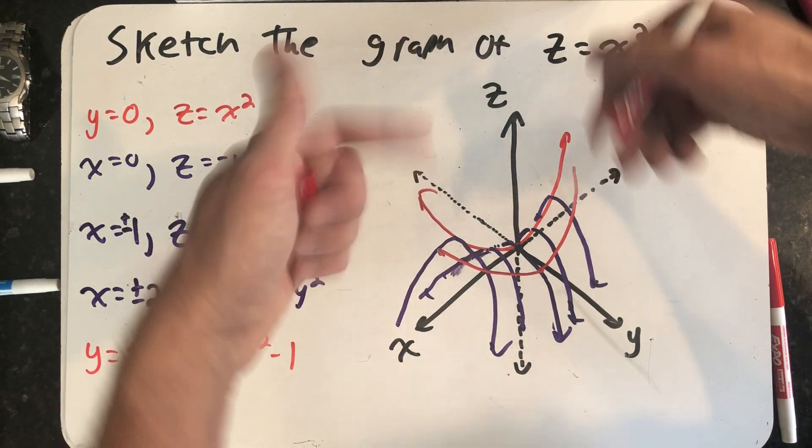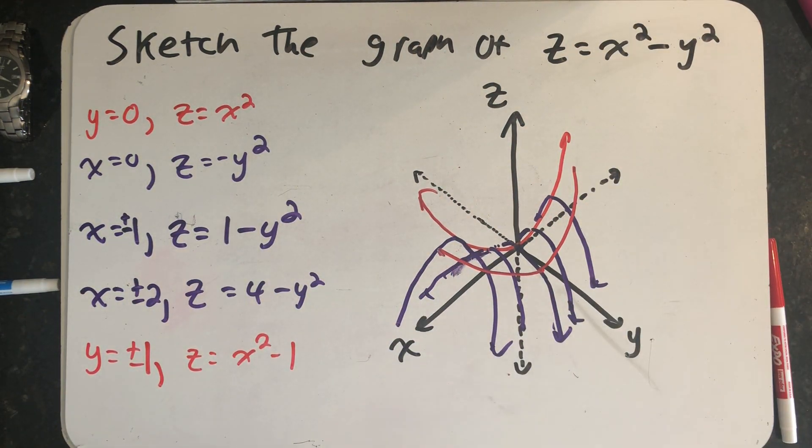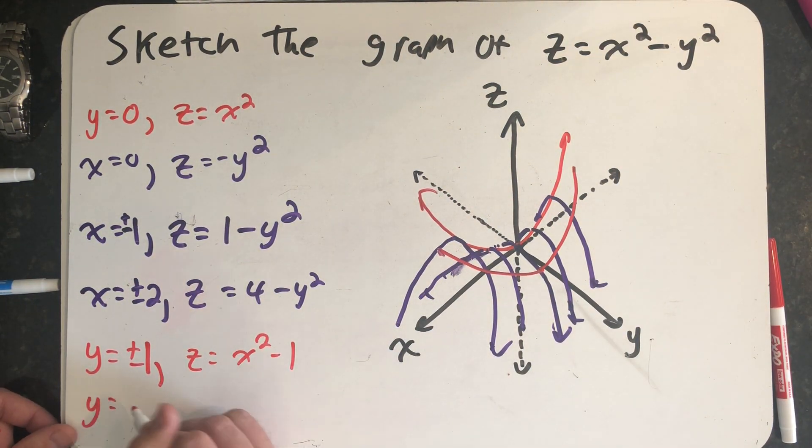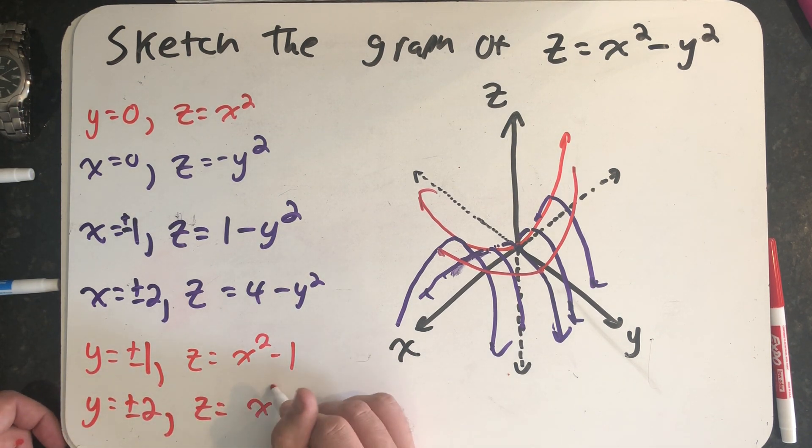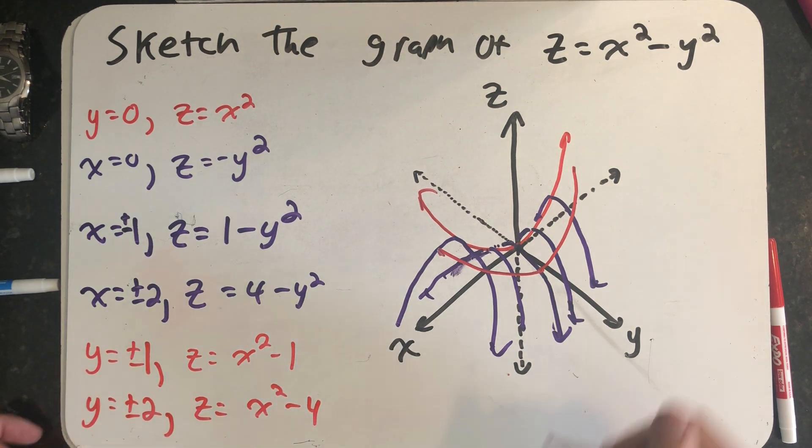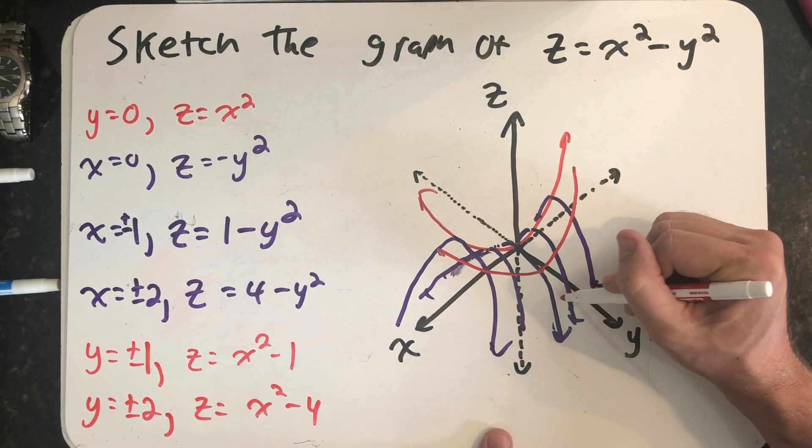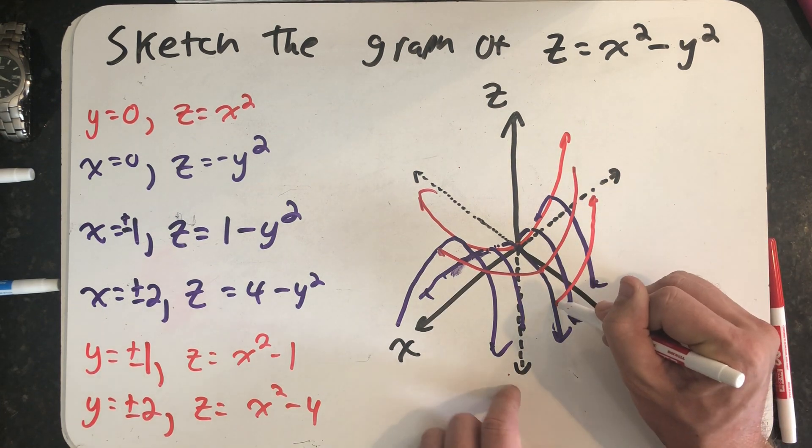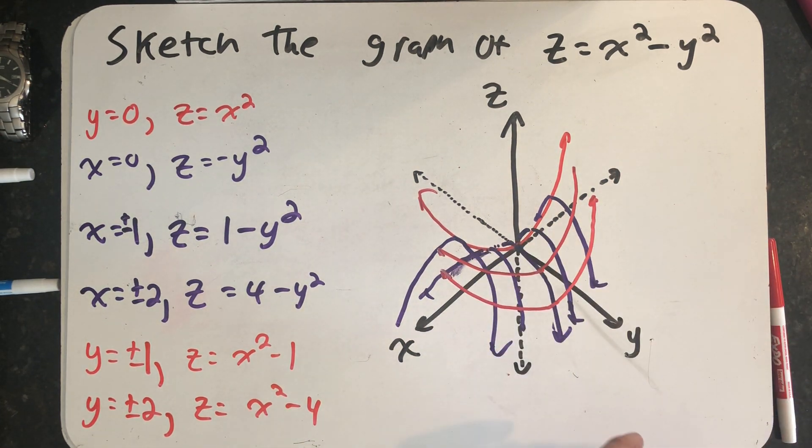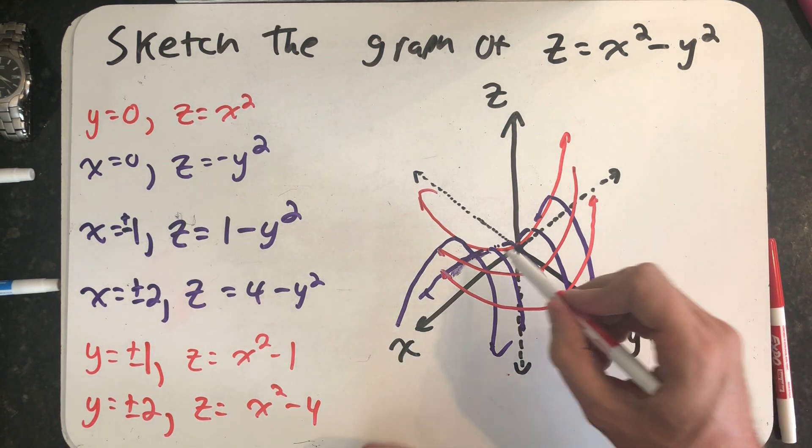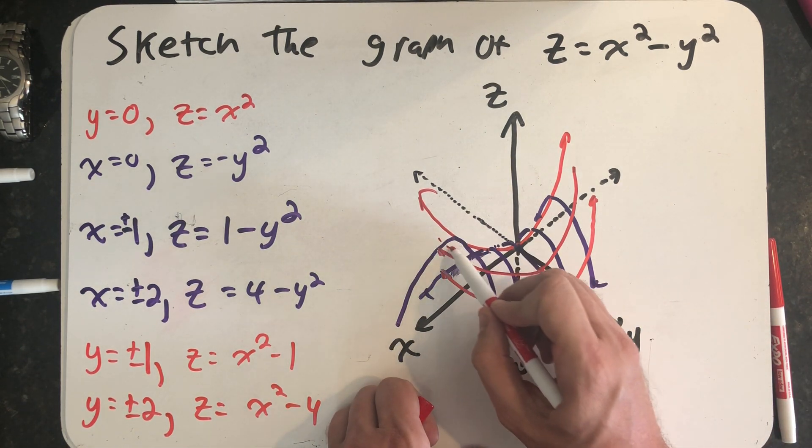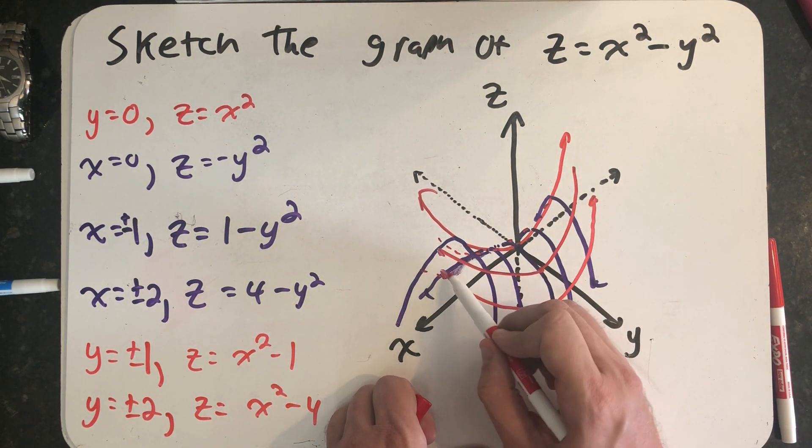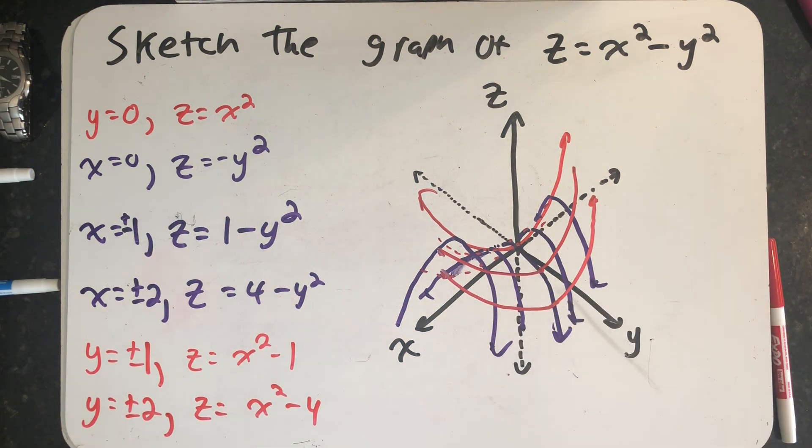I'm going to have a little bit of a hard time drawing on that side, so I'm just going to keep it on this side. Let's think about y equals plus or minus two. Then z would equal x squared minus four, and I'd get a parabola in the plane where y equals two just sketched a little further downwards.